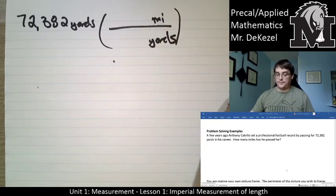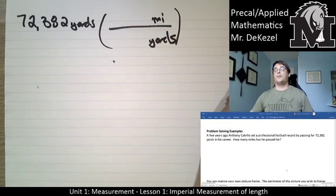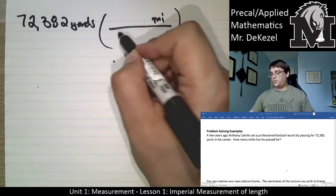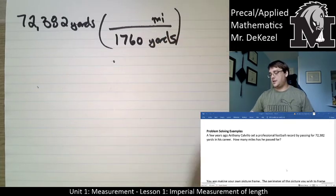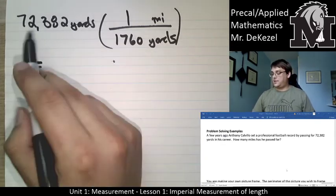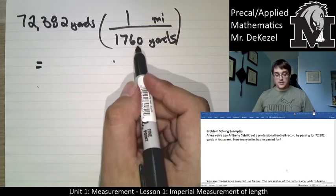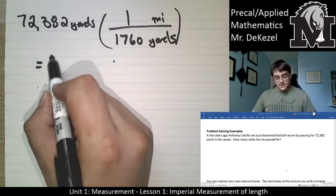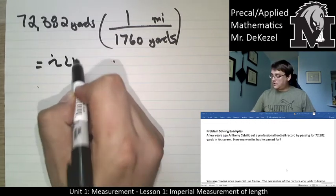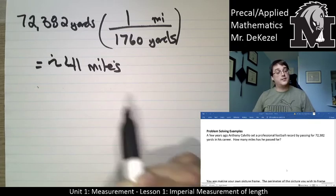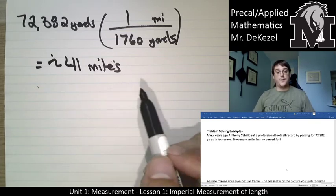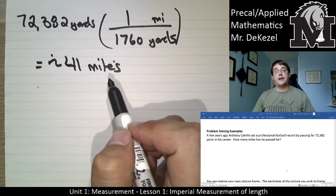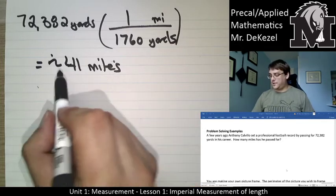There are 1,760 yards in a single mile — on page two if you need that. So 72,382 divided by 1,760 gives us about 41 miles. It's not exact, but it wants to know how many miles — it's about 41 miles, which is really quite far in a professional football league.